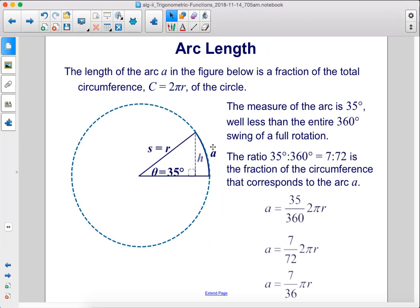The length of the arc a in the figure below is a fraction of the total circumference, c equals 2 pi r, of the circle.